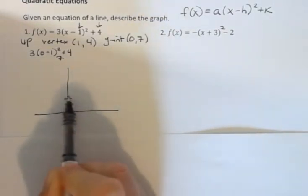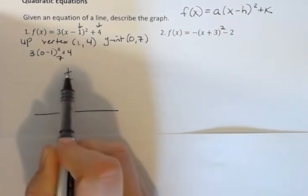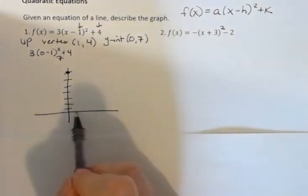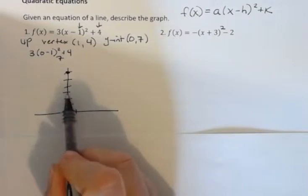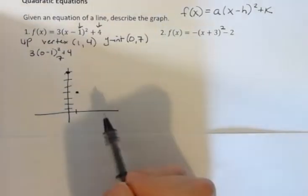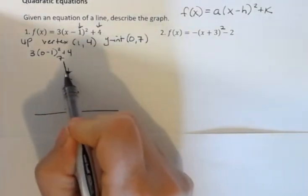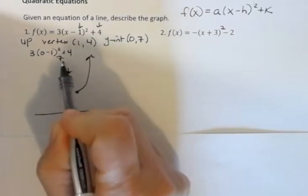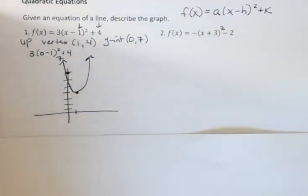And those three things are enough to let me give a rough sketch of this. So marking the y-intercept at 7, my vertex at (1, 4), and it's opening up. So then I would just say my graph, rough sketch, looks like this.